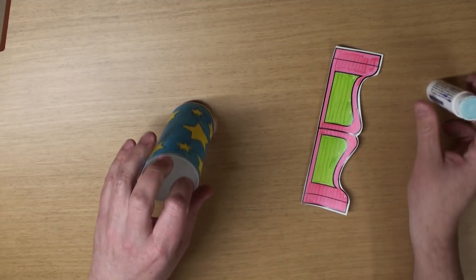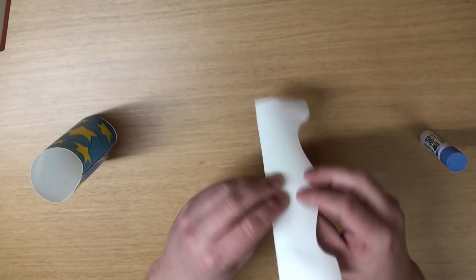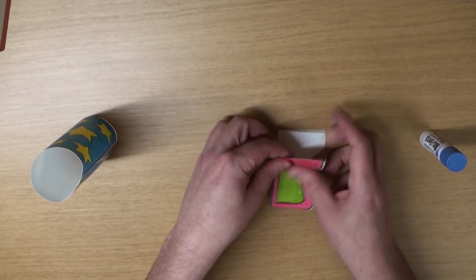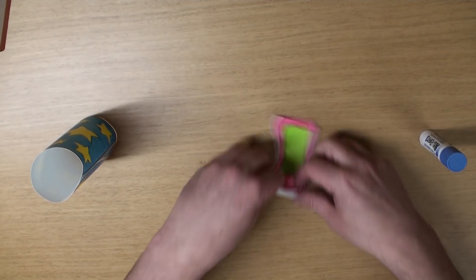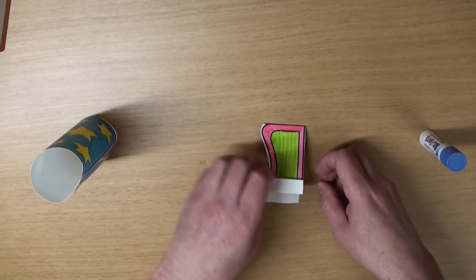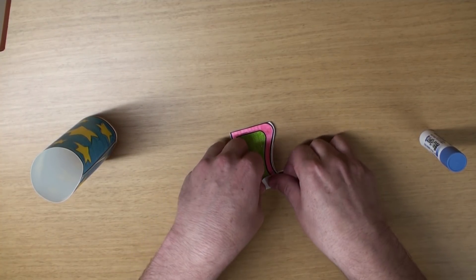And roll it up into a tube. Great! And just put that off to the side. And we're going to do some folding. Grab the handle and fold it like this. Now, fold the top too. Fold this one here. And fold the other one like this. Great!